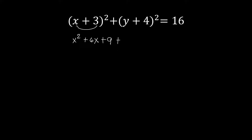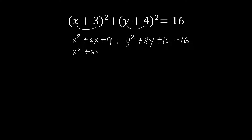Then we expand the next one: (y plus 4) raised to the power of 2. We do the special product again — y squared. Multiply the two: y times 4 is 4y, times 2 gives 8y. Then we square the last term: 4 squared is 16. That equals 16. We move the 16 to the left side by subtracting 16 from both sides, so we're left with 0 on the right. So this is now minus 16, equal to 0.